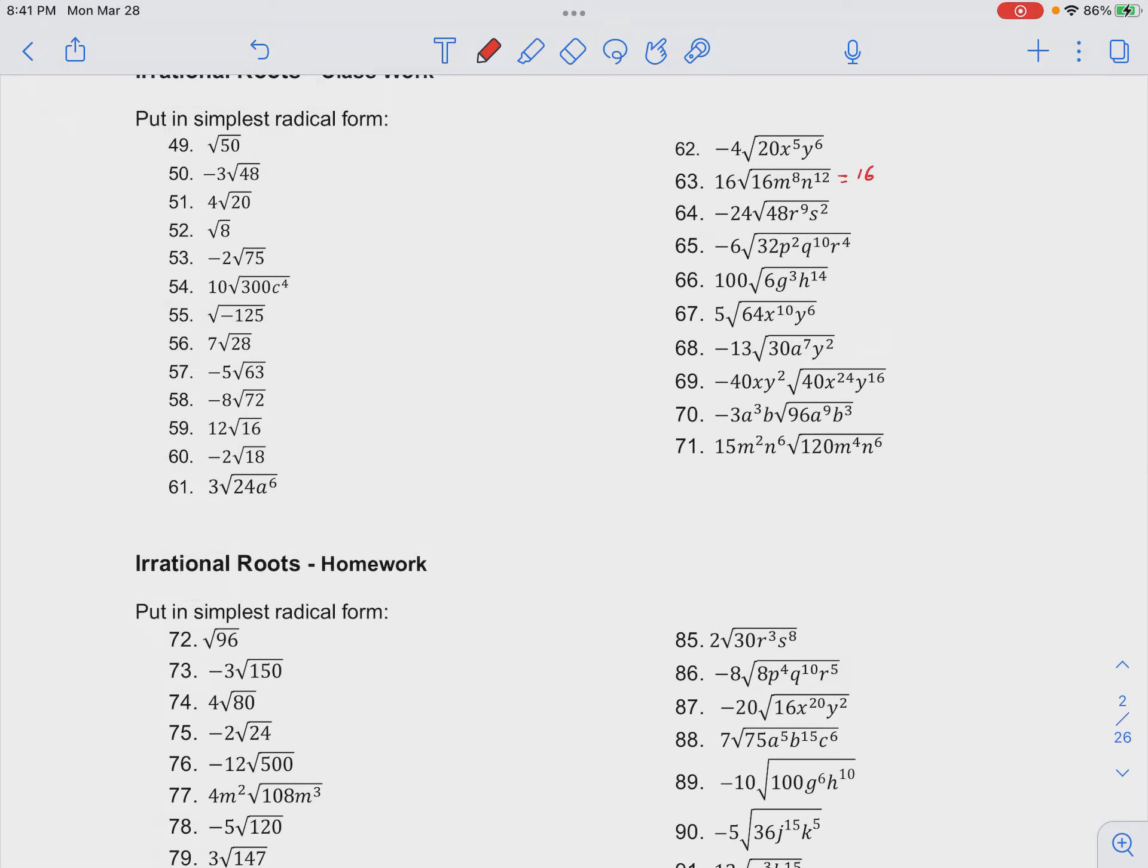So we're going to go ahead and rewrite this in such a way that we can then pull out things from under the square root. So 16 is a perfect square, that's 4 squared.